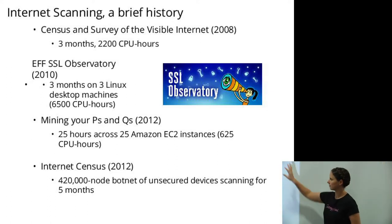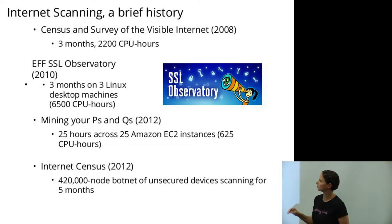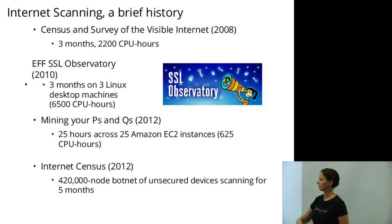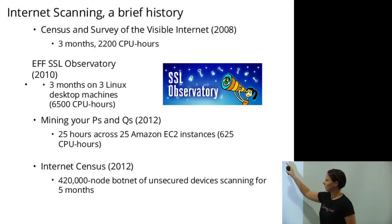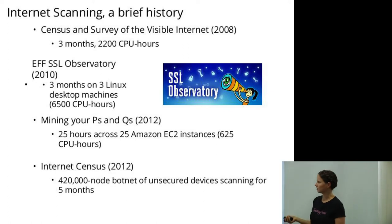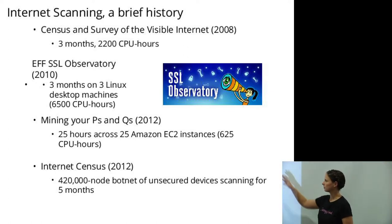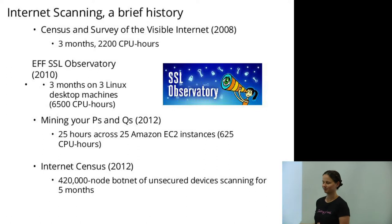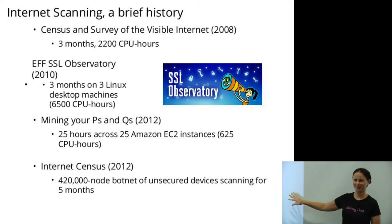A couple of years after that, in one of my papers, we actually started studying the EFF SSL Observatory, but it was a year old at that point. So we rescanned the internet in 2011 and 2012 and got a more comprehensive dataset of HTTPS certificates. We were able to do a slightly faster scan by optimizing nmap and parallelizing it using Amazon EC2.